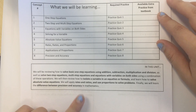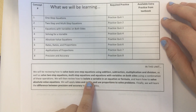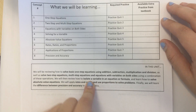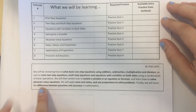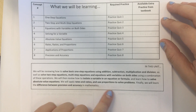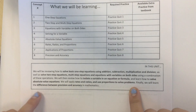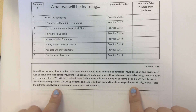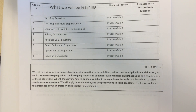We'll then review how to isolate a variable in an equation or formula — isolate means get by itself. And then we'll learn how to solve absolute value equations. We'll apply rates and ratios and use proportions to solve problems. And then finally, we'll learn the difference between precision and accuracy in mathematics. So, let's go!